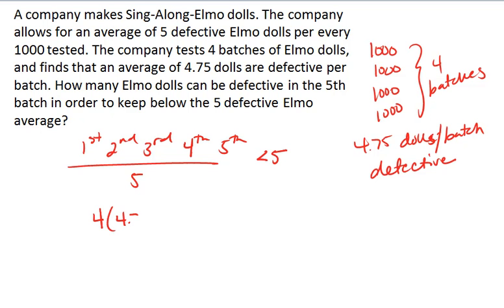So we can just times that 4.7 by 4 to represent those first four batches, plus our fifth batch, which will give a variable of x. Divide by 5, and this needs to be less than 5.